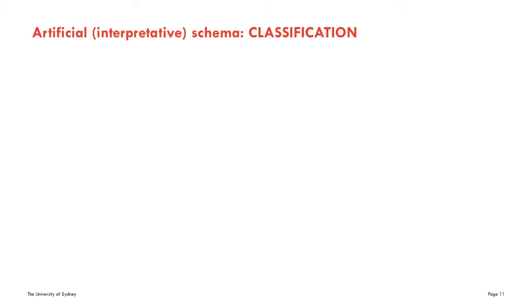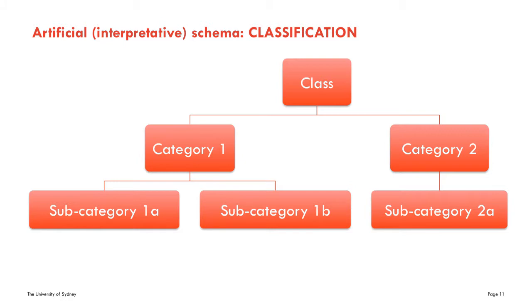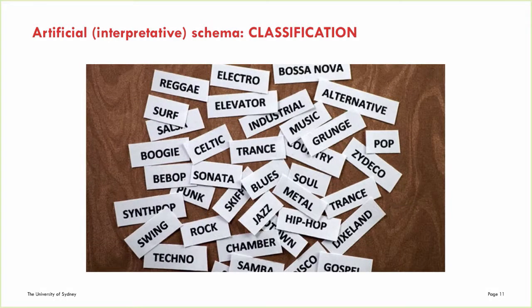Moving to artificial or interpretive schema, one of the most important is classification. Classification is about how we organize concepts into categories and subcategories. Classification can include research approaches, dimensions of a problem, parts of an issue, topics or aspects of a topic, and so on. For instance, popular music can be organized into different types: reggae, trance, punk, etc.